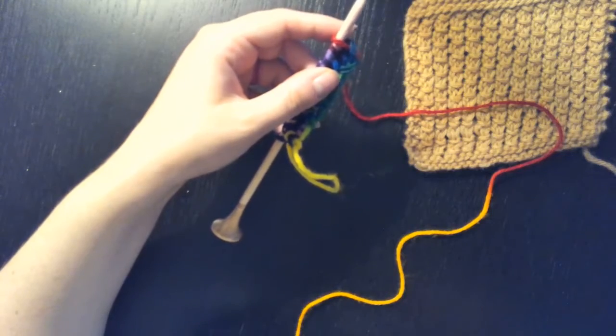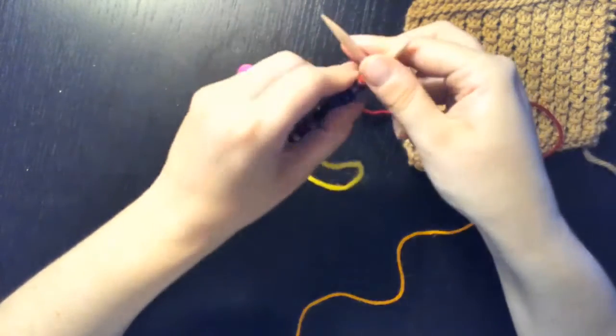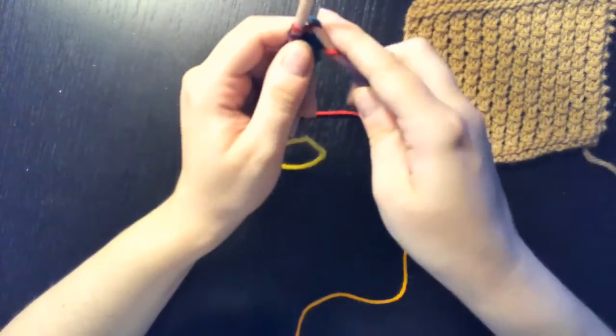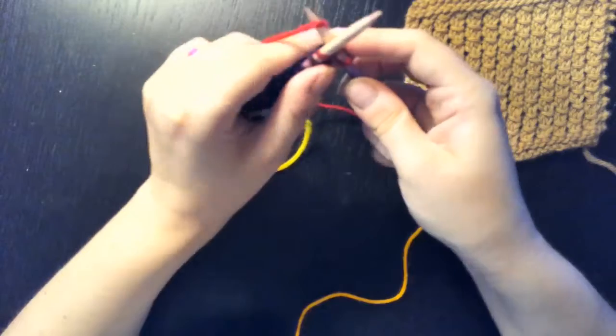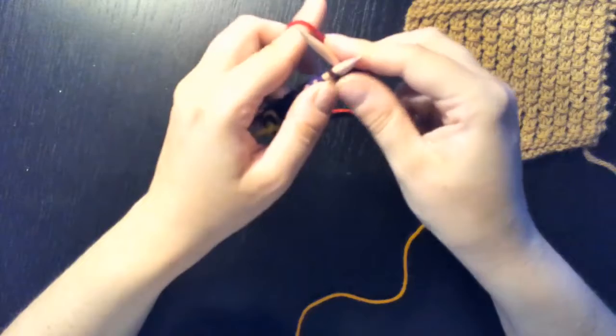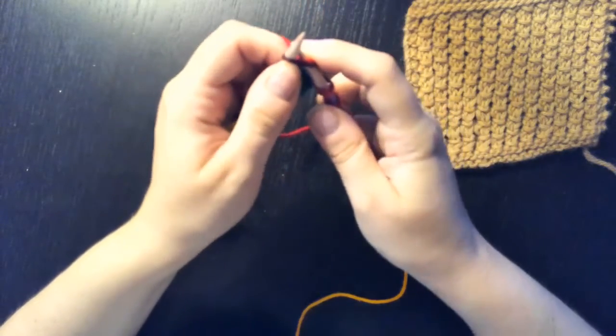Now your first row, what you're going to do is yarn over, and then knit one, knit two.